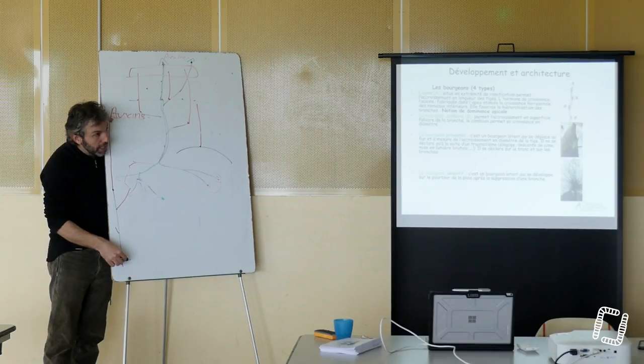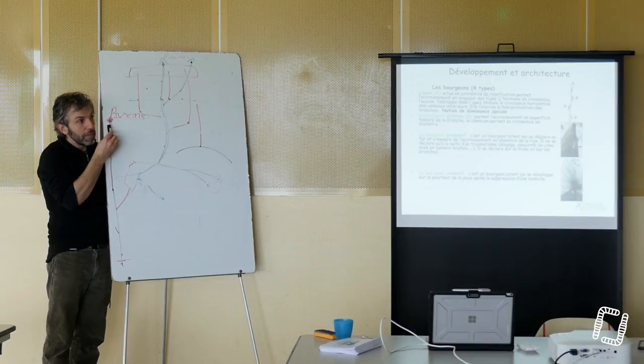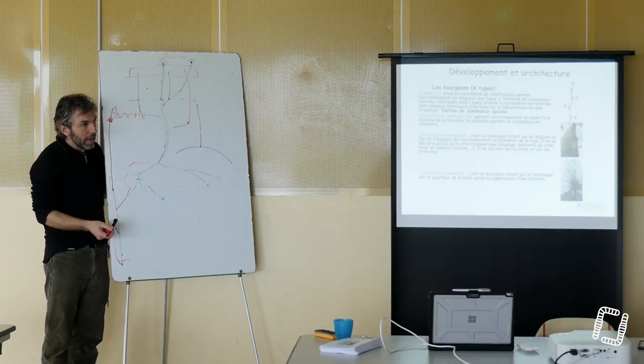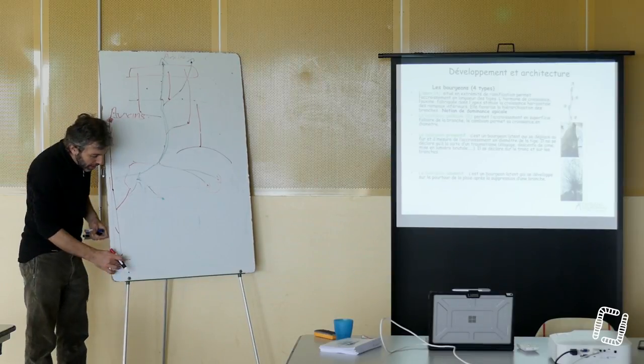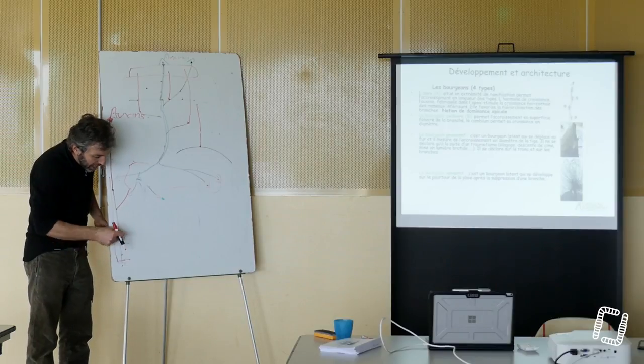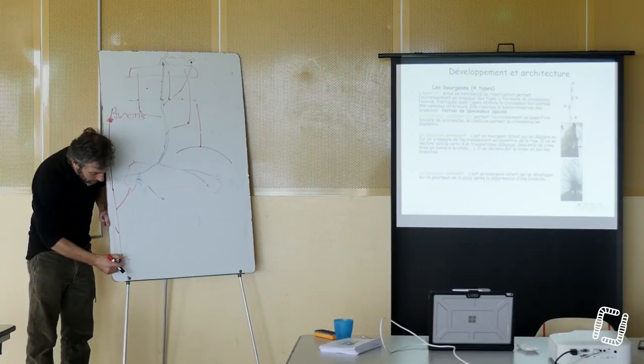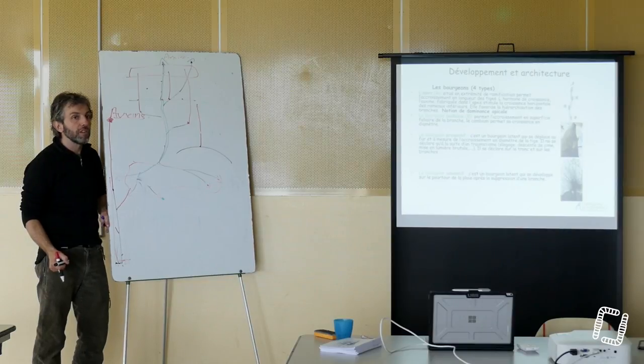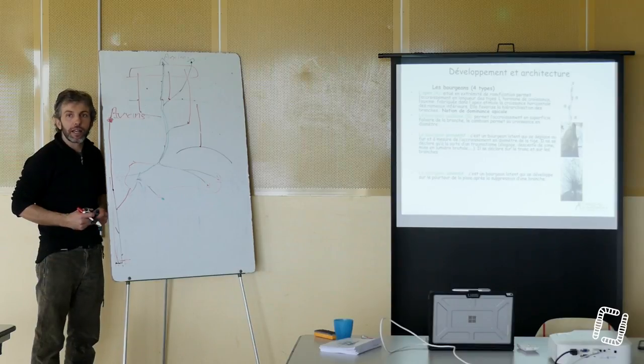Mais par exemple, si je fais une coupe ici, il n'y a plus d'inhibition de cette partie-là, et c'est lui qui se retrouve le plus haut, il se met à sortir. Même si c'est 4 ou 5 ans après. Donc si c'est 4 ou 5 ans après, on a un grossissement en diamètre de 4 ou 5 ans, et tous les ans le bourgeon va être reproduit à l'intérieur et être ici prêt à démarrer. C'est un bourgeon qui est proventif. Il a été fabriqué dans le développement du végétal. C'est un système de survie en définitive.